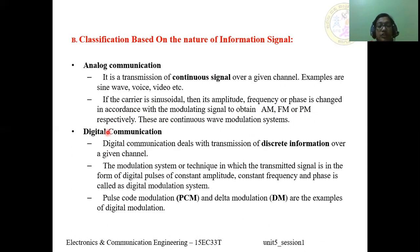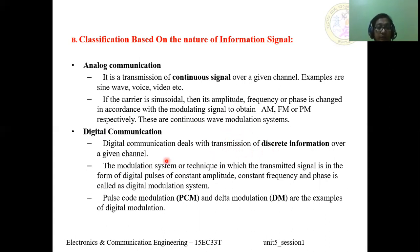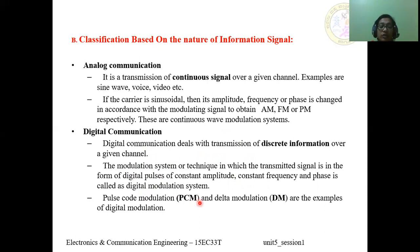In digital communication, we deal with the transmission of discrete information over a given channel. The data is discrete with respect to time, represented as digital pulses of constant amplitude — zeros and ones. The analog signal can be represented in the form of digital bits. Pulse code modulation and delta modulation are examples of digital modulation techniques used in digital communication.